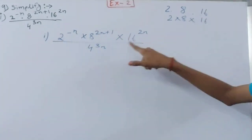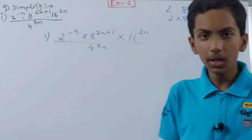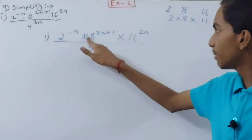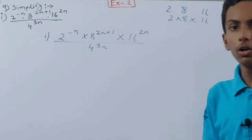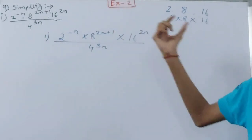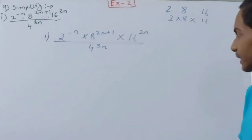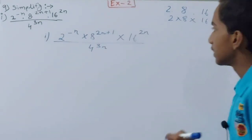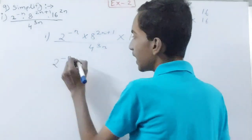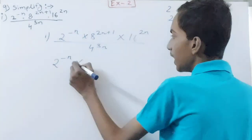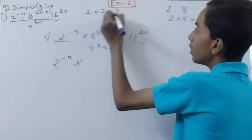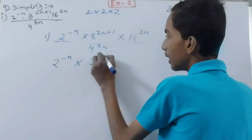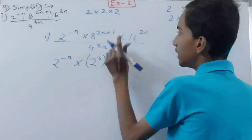We have 2, 8, 16, and 4 — all of these can be written with base 2. 4 is 2², 16 is 2⁴, and 8 is 2³. So 8 can be written as 2³ whole to the power (2n+1).